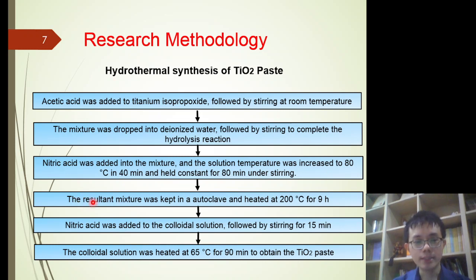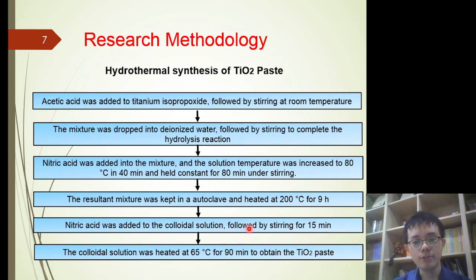The resultant mixture was then kept in an autoclave and heated at 200 degrees Celsius for 9 hours. Following this, nitric acid was added to the colloidal solution, followed by stirring for 15 minutes. Lastly, the colloidal solution was heated at 65 degrees Celsius for 90 minutes to obtain the titanium dioxide paste.